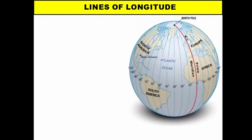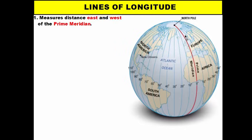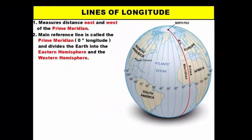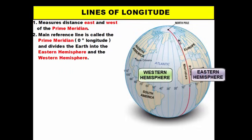Longitude lines are different from latitude lines. While latitude lines run across the globe, longitude lines run from the north pole to the south pole. Their main purpose is to measure distance east and west of the prime meridian, which is their main reference line — just as the equator is the reference for latitude. The prime meridian is marked at zero degrees and divides the earth into the western and eastern hemispheres.